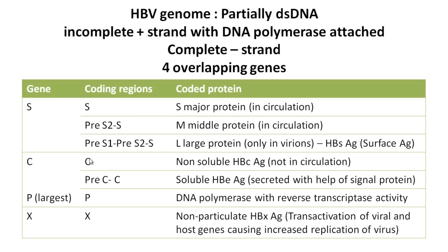On the S gene there are three coding regions: pre-S1, pre-S2, and S. If only the S region is coded, it produces the S protein found in circulation. If pre-S2 and S are coded, it forms the M protein, also found in circulation. If all three coding regions are coded, it forms the L protein — what we know as hepatitis B surface antigen. So S gene stands for surface antigen coding.